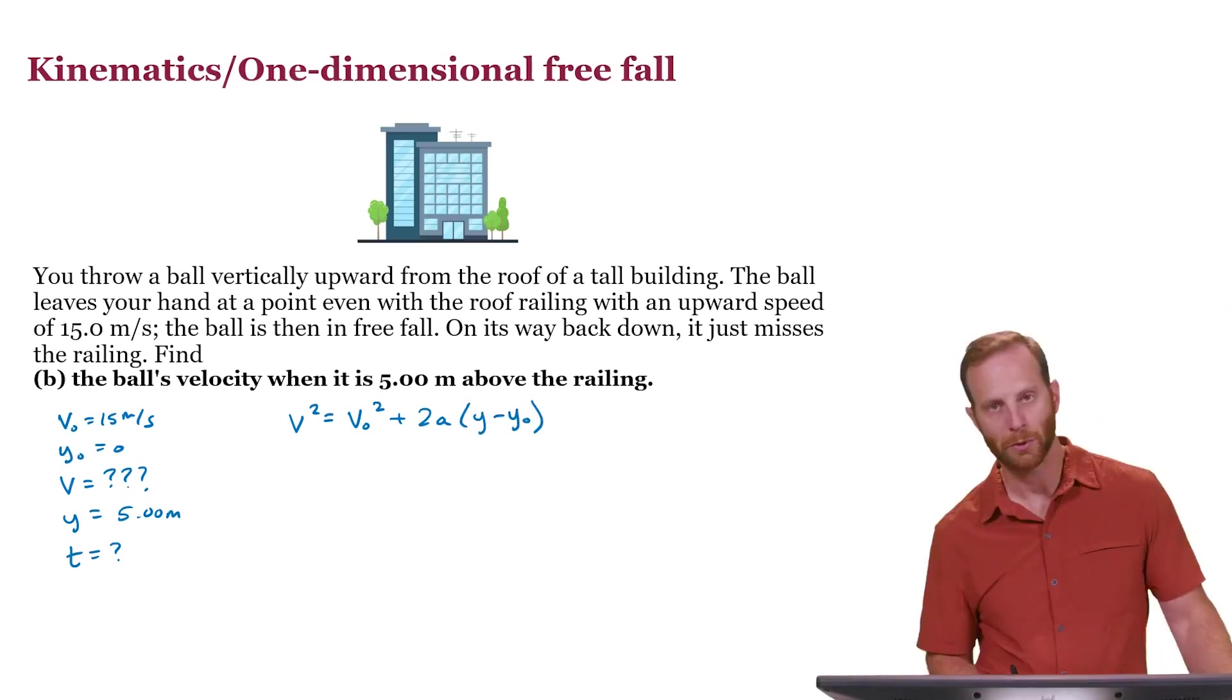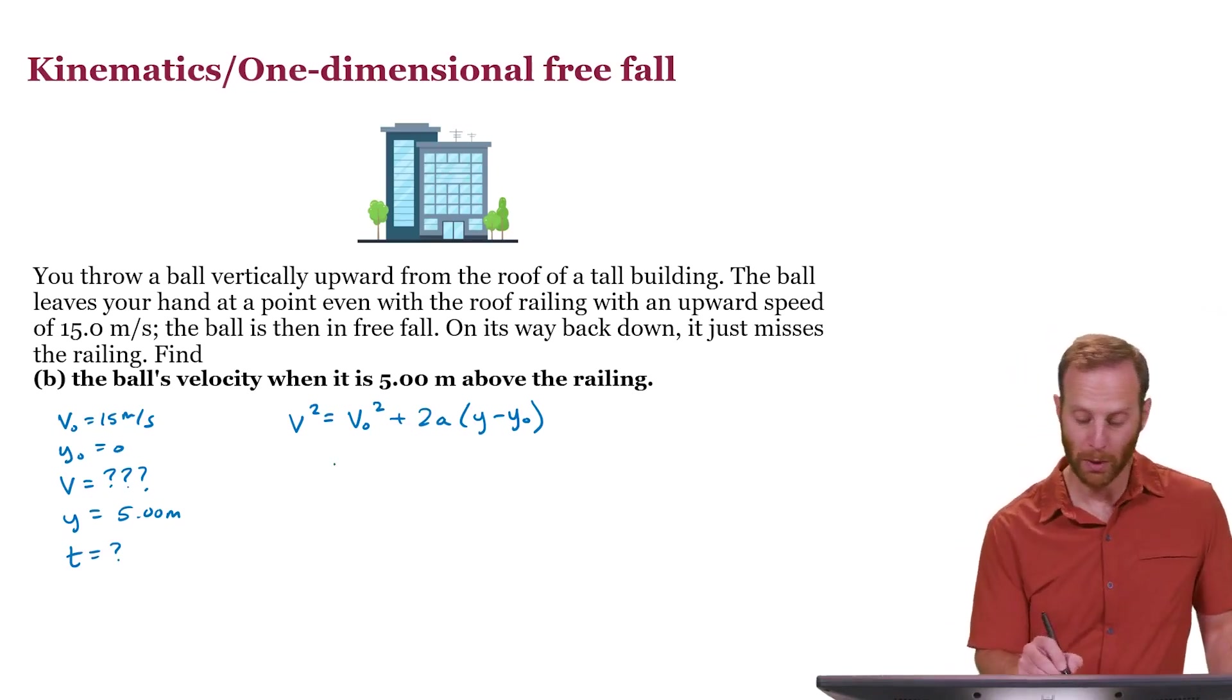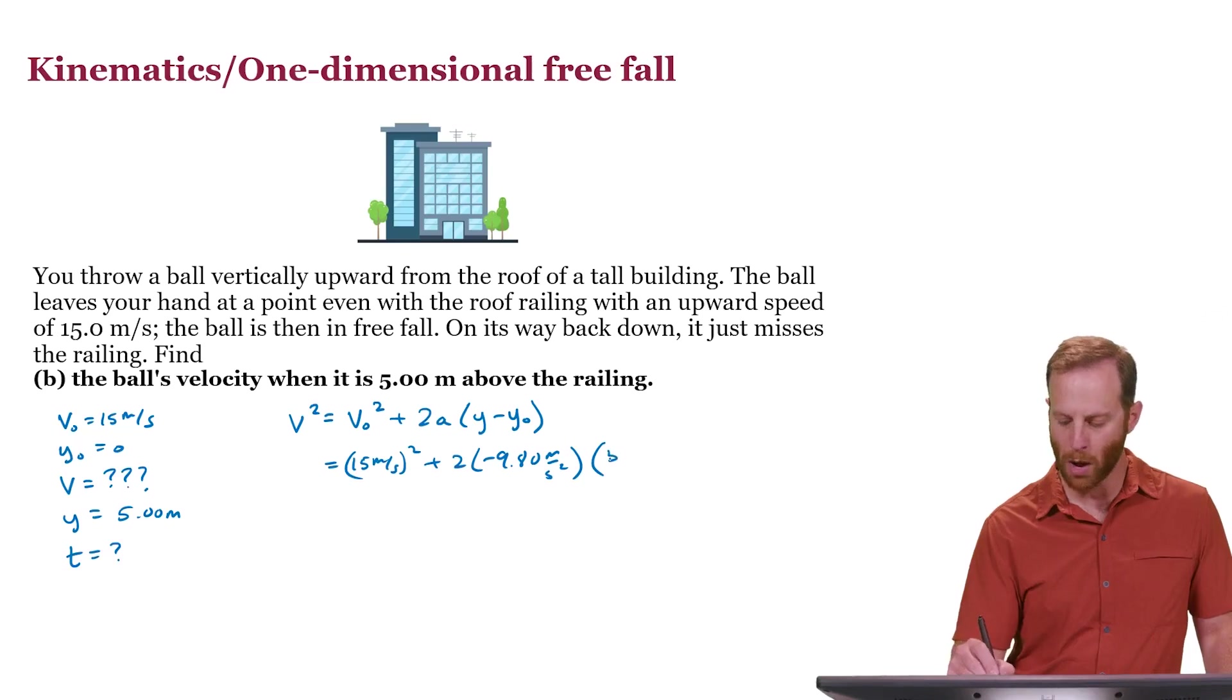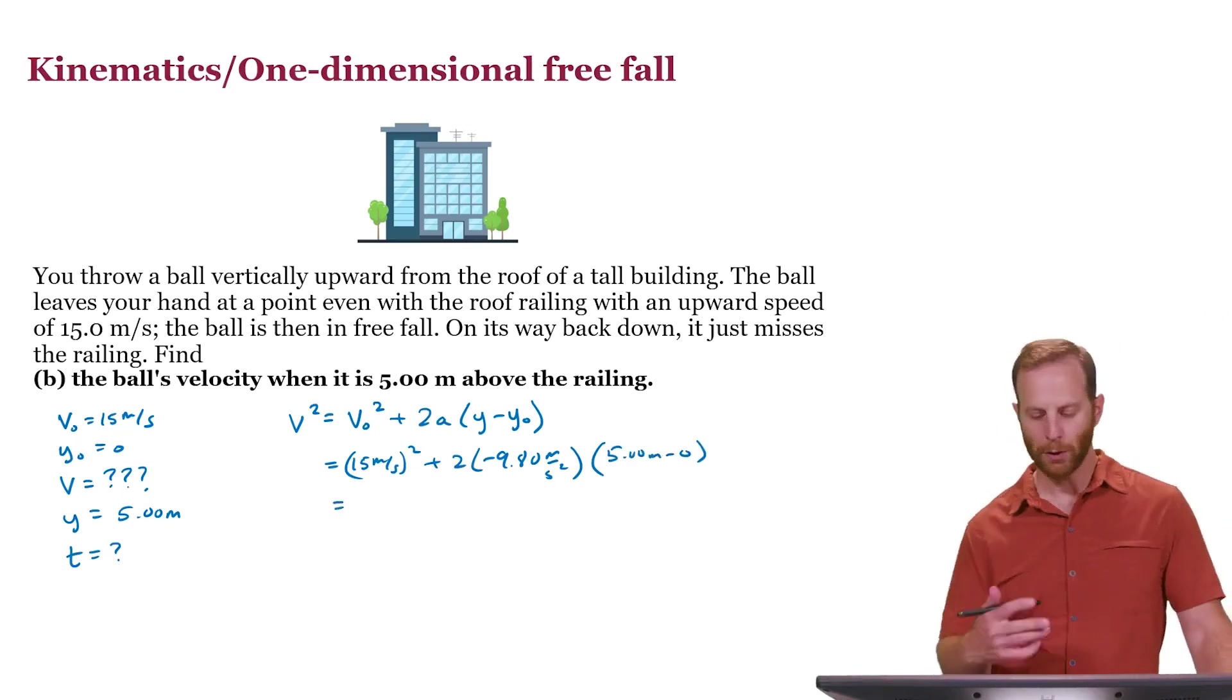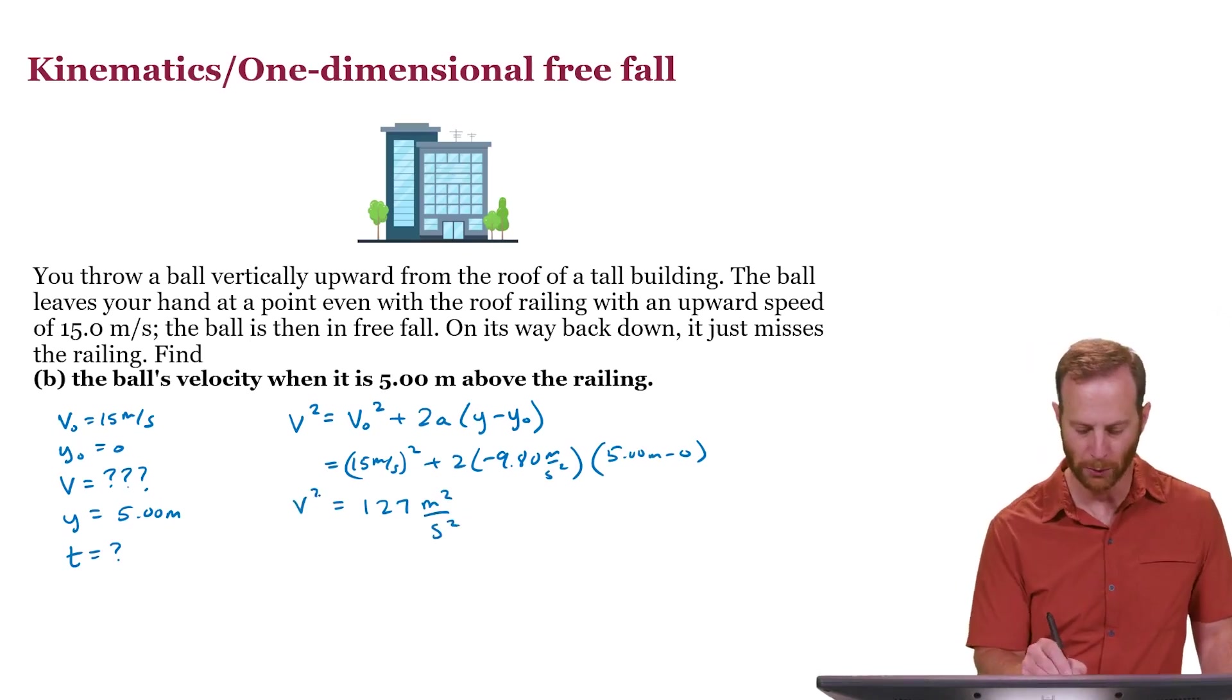And it looks like this: v squared is equal to v0 squared plus 2a, and the change in y. We are looking to figure out what is the ball's velocity, which will be on the left-hand side, so we can start to plug in the numbers that we have. 15 meters per second squared plus 2 minus 9.80 meters per second squared, and then the change in y, which is 5 meters minus 0. What you get when you multiply everything together, you'll find 127, and the units are meters squared per second squared, which they should be since this is equal to v squared.